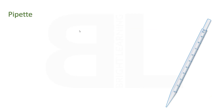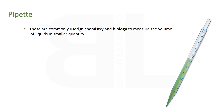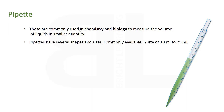Flasks are commonly used in chemistry and biology to measure the volume of liquids in smaller quantities. They have several shapes and sizes, commonly available in sizes of 10 ml to 25 ml. They are graduated to a specific mark, and up to this mark you can fill the liquid or solution.